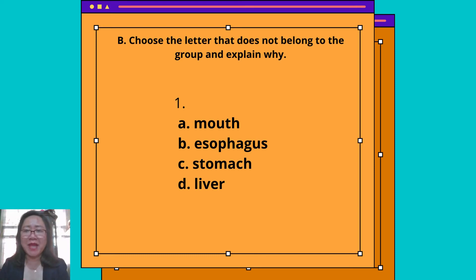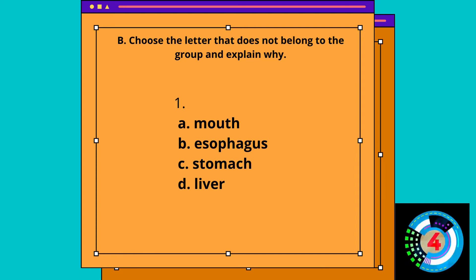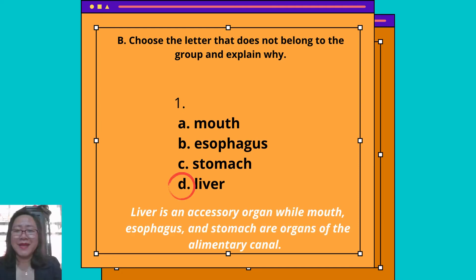Part B: Choose the letter that does not belong to the group and explain why. Number 1 — Answer: Letter D, Liver. Liver is an accessory organ, while mouth, esophagus, and stomach are organs of the alimentary canal.